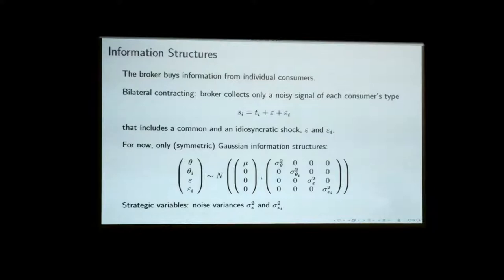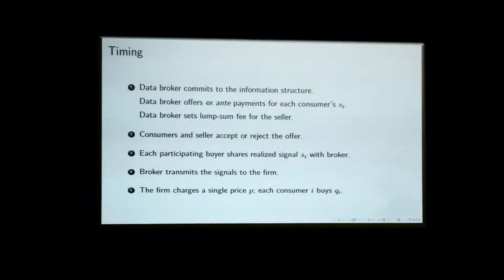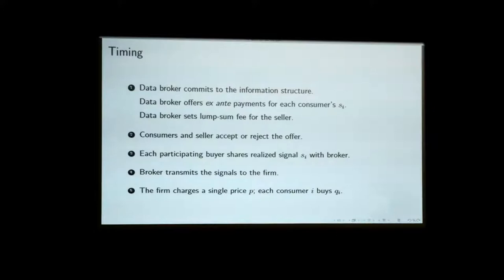The timing is very simple. The data broker commits to an information structure, offers payments to the consumer to receive the information, and asks the firm to pay a lump-sum fee for the information provided. They accept or reject the offers, then receive private information that they pass on to the intermediary, which is then passed on — possibly noised up, conveying less information if appropriate — and on the basis of that information the firm can then set a price tailored to the segment.